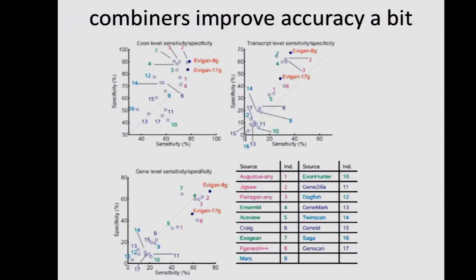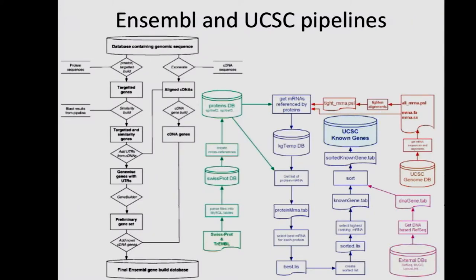And those combiners, Evagen and Glean and others like it, do improve on both the exon transcript and gene level sensitivity and specificity, particularly, so not so much at the exon level, but particularly at the gene level. So the idea here is, here's how much of all of the sites in the gene do you actually get right? Do you get the entire gene right, or you're only getting pieces and parts of it right?